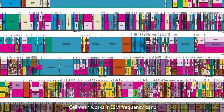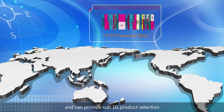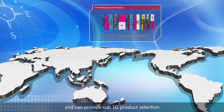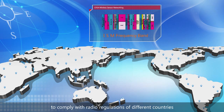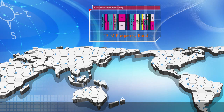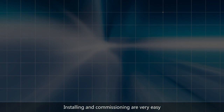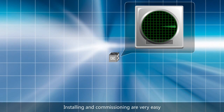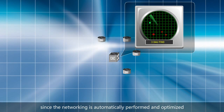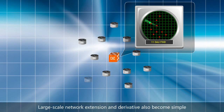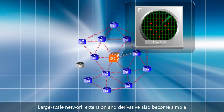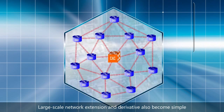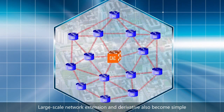CELL MESH works in the ISM frequency band and can provide sub-1G product selection to comply with radio regulations of different countries. Installing and commissioning are very easy since the networking is automatically performed and optimized. Large-scale network extension and derivation also become simple.